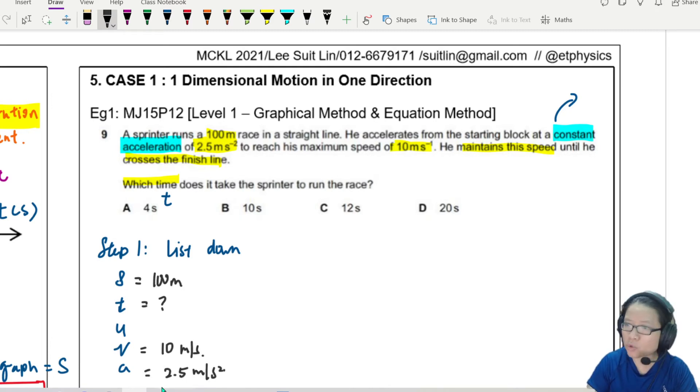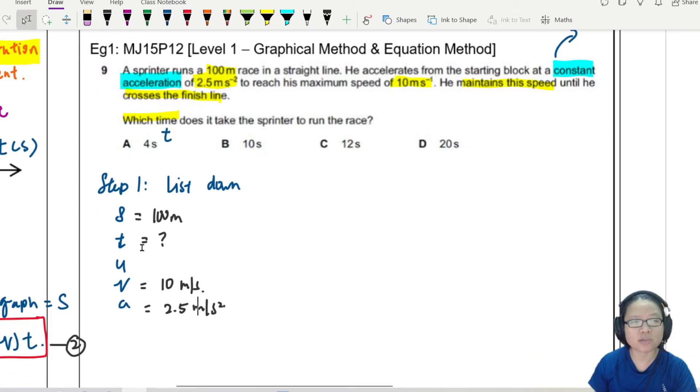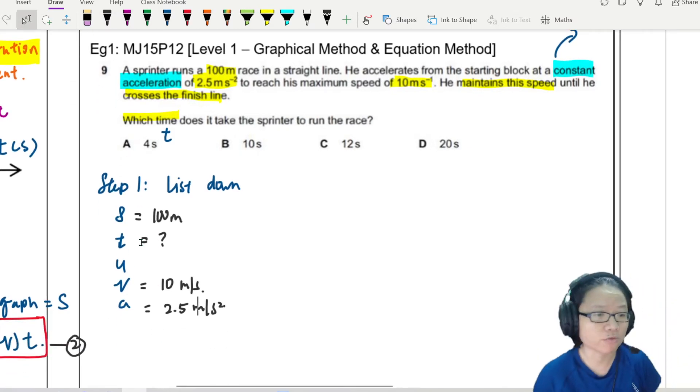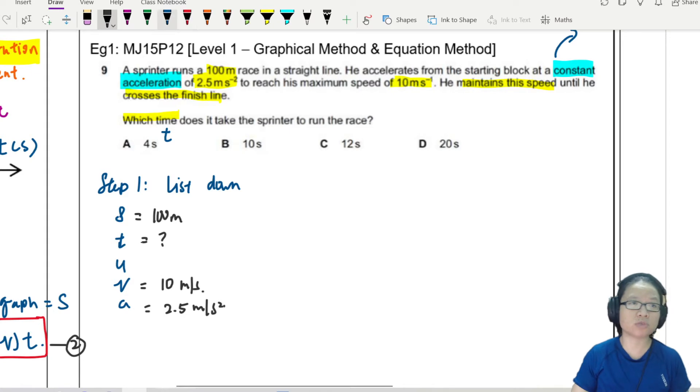This one all feels doable. It feels like, well, since I don't have T, I can look for T. So I will choose the equation with no U. Really? But you see, it says here, starting block. I need to read a bit. Starting block means U is 0.